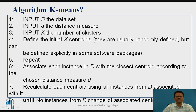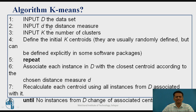Let us understand the algorithm for K-means clustering. This algorithm is basically used to group data based on some kind of similarity. The parameters to consider are: the total dataset as input, and an appropriate distance measure to quantify similarity between two data values.